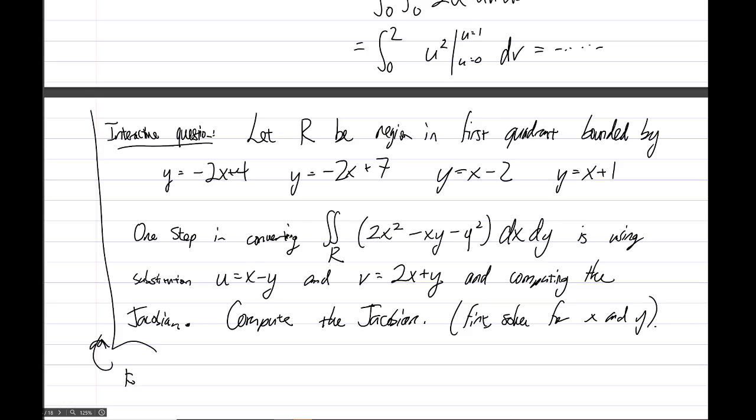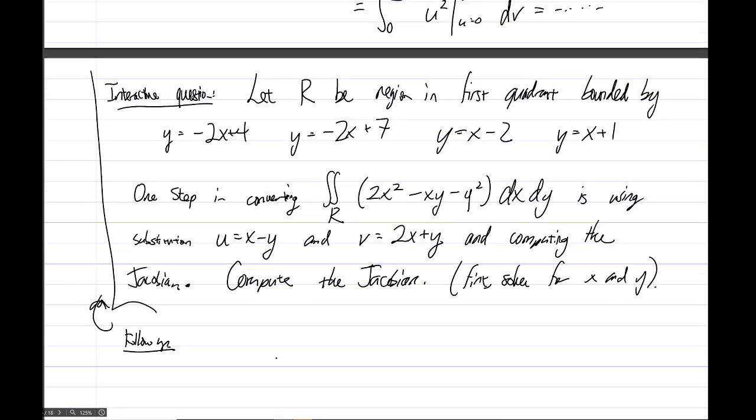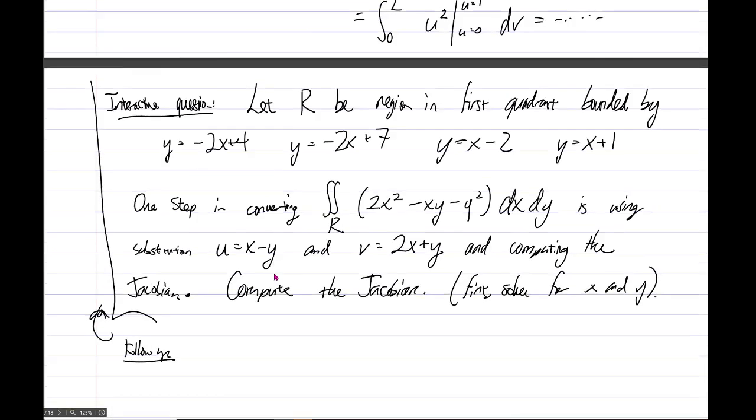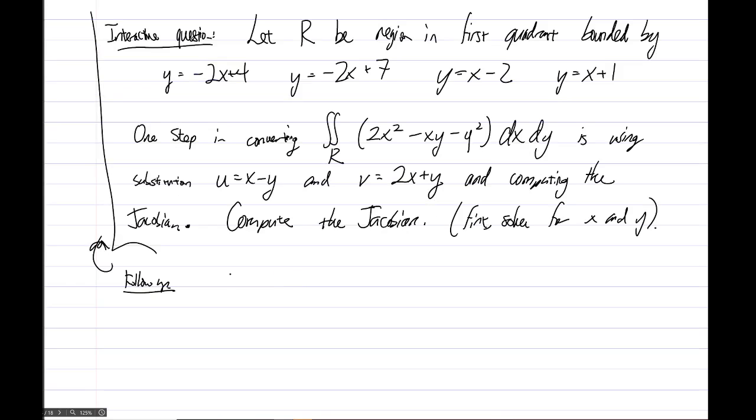So for the interactive question, just compute the Jacobian, just to make it not too much work here. Compute the Jacobian, but first you have to solve for x and y before computing the Jacobian, all right? That'll be it for the interactive question. If you wanted to, though, to follow up on it, go through the six-step process, right? So completely rewrite the integral. Do all the process that's described here, that would be certainly better. Don't need to make that part of the interactive question, though. That's a lot of extra work, I guess. So, you know, completely rewrite this integral. If you want to challenge yourself and do more, it would be really good practice, is to convert this to a dudv integral.